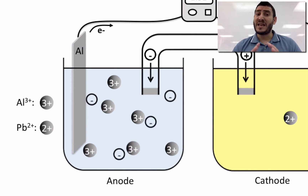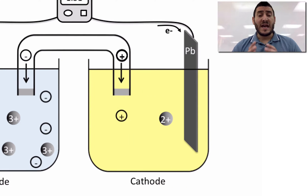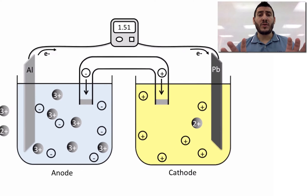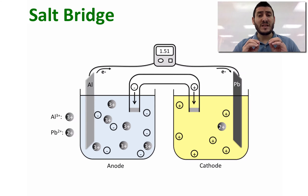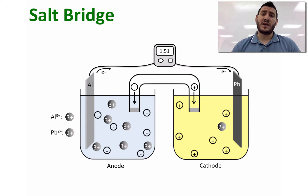The salt bridge pumps negative ions (anions) to the anode compartment and positive ions (cations) to the cathode compartment. This way, both compartments remain neutral at all times, which allows the battery to continue generating power until it reaches equilibrium.